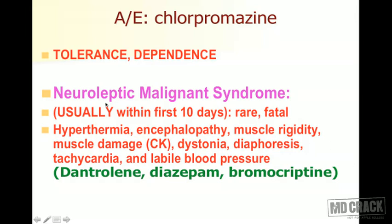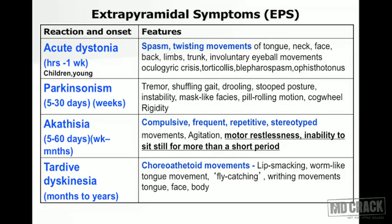To manage NMS: use dantrolene (a directly acting muscle relaxant), diazepam to quieten the patient, and bromocriptine (a dopamine agonist) to revive dopaminergic transmission that was suddenly blocked by chlorpromazine. Now let's discuss extrapyramidal symptoms (EPS) in detail. There are four types of extrapyramidal movements listed in a table in chronological order - whatever happens earlier is listed first.